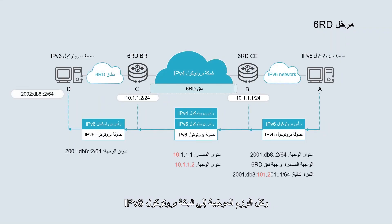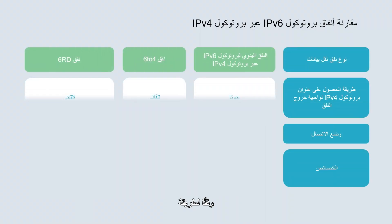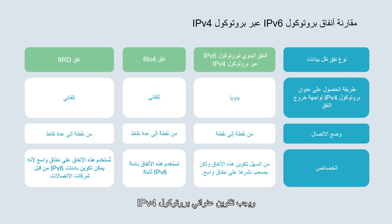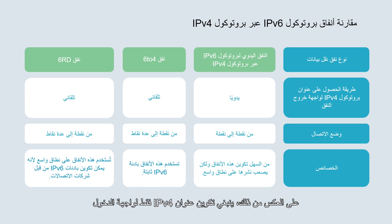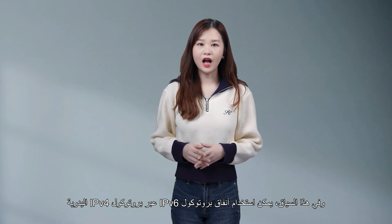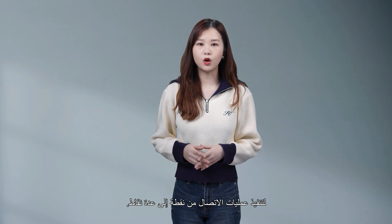All packets destined for the IPv6 network are forwarded to the 6RD BR router, which then forwards the packet to the IPv6 network. Next, we'll compare the three types of tunnels. According to the method of obtaining the IPv4 address of the tunnel egress, tunnels are classified into manual tunnels or automatic tunnels — 6to4 tunnels and 6RD tunnels are automatic tunnels. IPv4 addresses of the ingress and egress need to be manually configured for an IPv6 over IPv4 manual tunnel. In contrast, only the IPv4 address of the ingress needs to be manually configured for a 6to4 or 6RD tunnel, and border devices can automatically obtain the IPv4 address of the egress based on the destination address of the packet. Therefore, IPv6 over IPv4 manual tunnels can be used to implement only point-to-point connections, while 6to4 and 6RD tunnels can be used to implement point-to-multipoint connections.